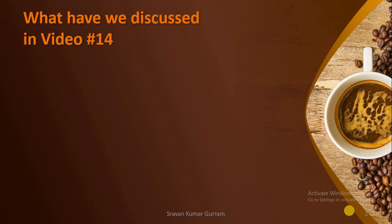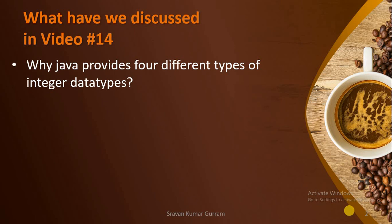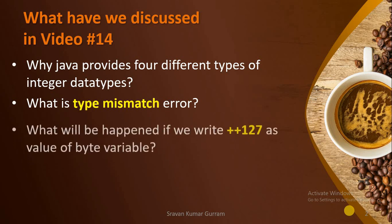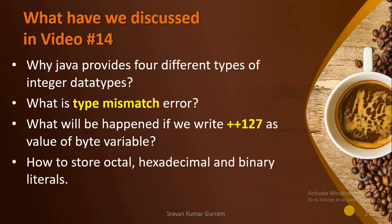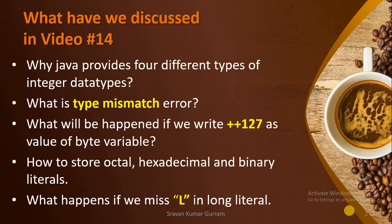Before starting today's session, let us recall what we discussed in our last video. We clearly discussed how to store whole numbers using integer data types, why Java provides four different types of integer data types, what is type mismatch error, what happens if we write increment operator with 127 as the value of a byte variable, how to store octal, hexadecimal and binary literals, and what happens if we miss capital L or small l in a long literal. If you haven't watched that video, please watch it — the link is given in the description box as part of the data types concept.